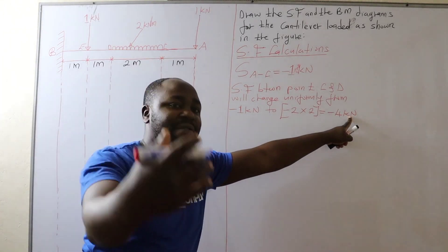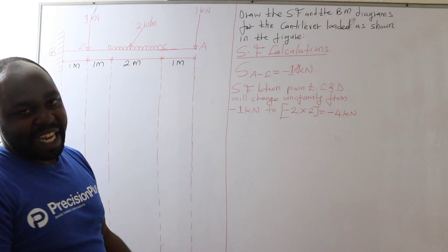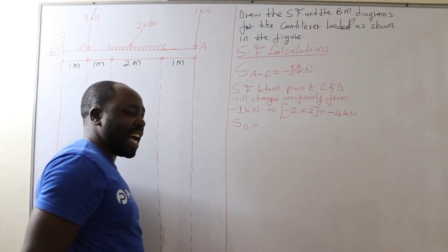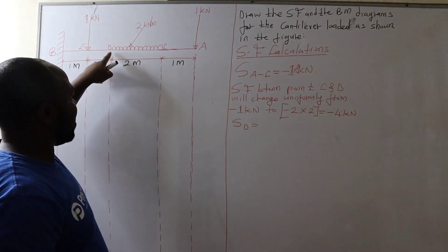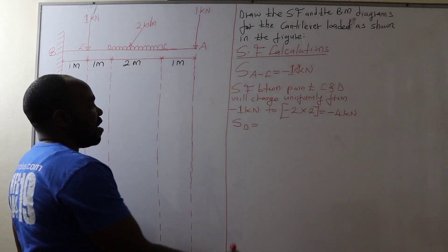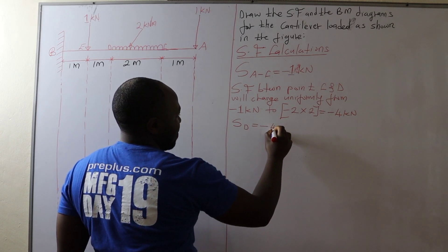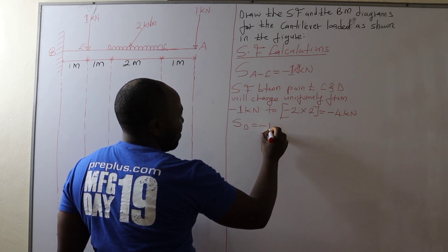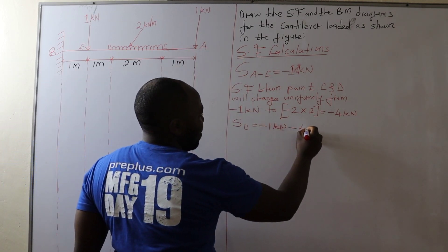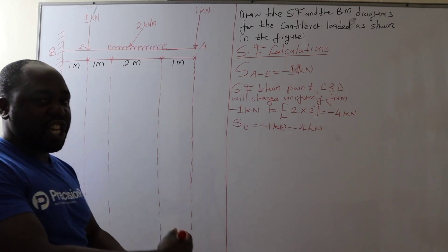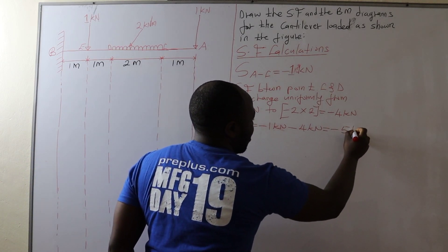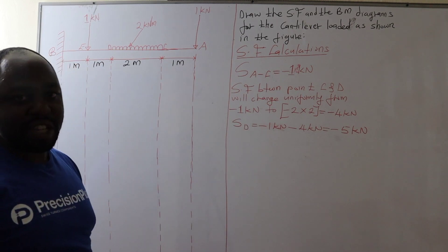That is how the shear force will change between point C and D. Then we go to the shear force at point D. The shear force at point D is going to be negative 1 kN — that is the shear force between A and C — plus negative 4 kN, which is the change in shear force between C and D. This gives us negative 5 kN, which is the shear force at point D.